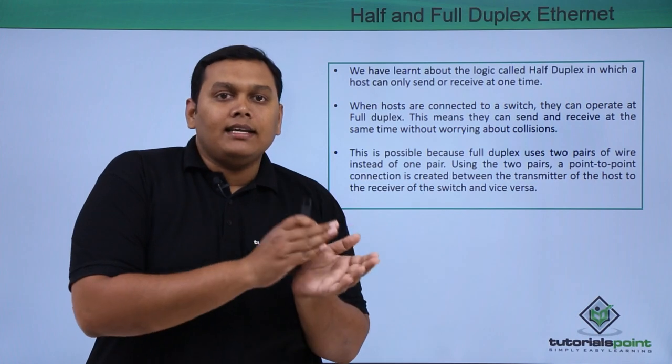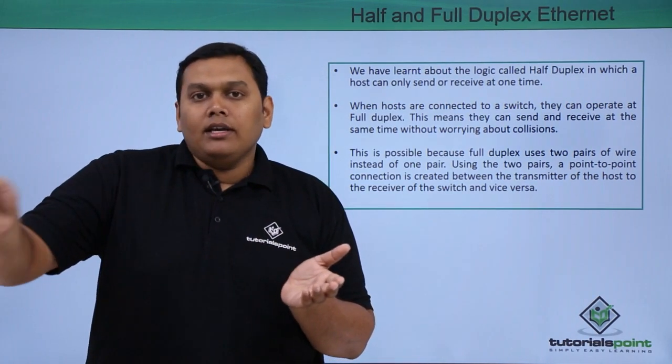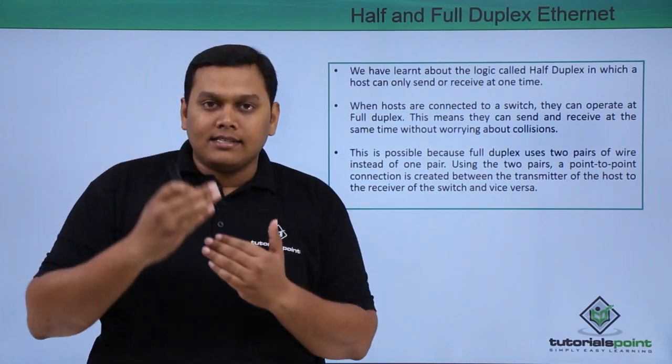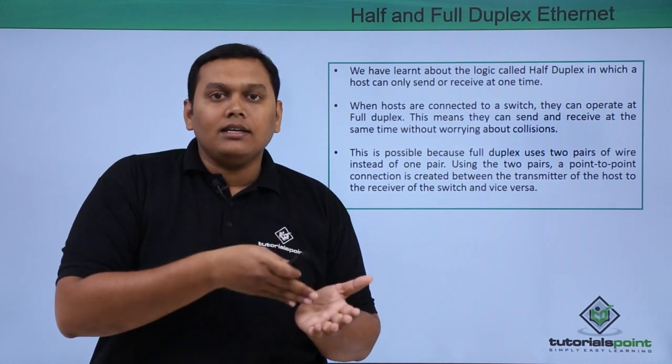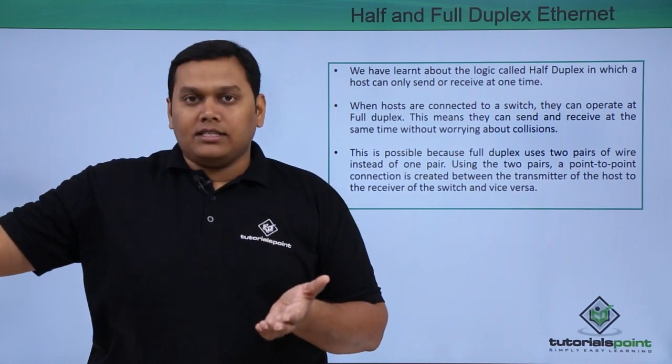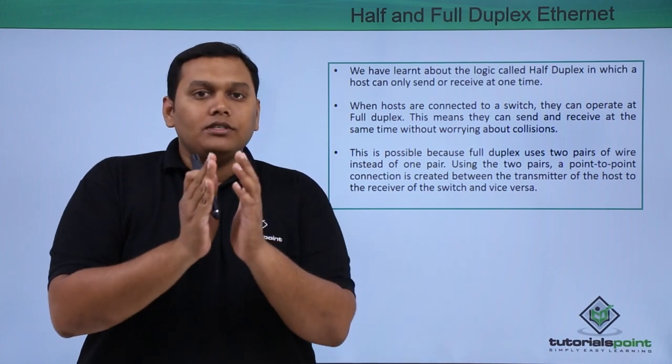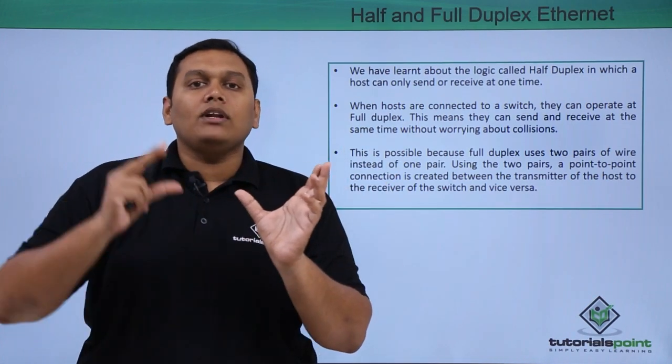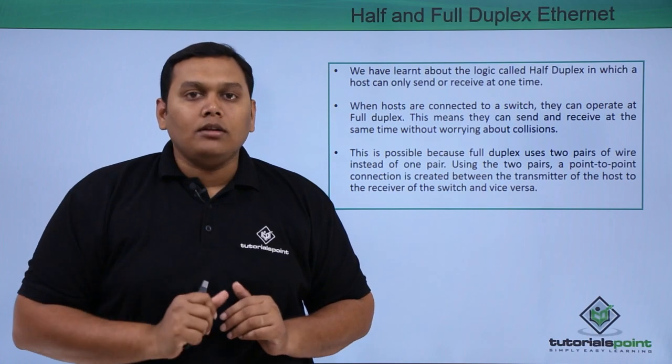When a Wi-Fi is sending data to one access point, the access point can only receive; it cannot send any data to any other clients. So half duplex means only can receive or only can send at one point.